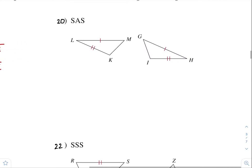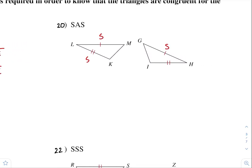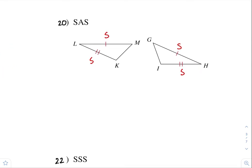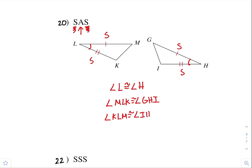Number 20. We have a pair of congruent sides and another pair of congruent sides. What additional piece of information do you need to prove these triangles are congruent by SAS? We already have one pair of sides and another — we're missing the angle. The angle has to be in between the two sides. So the angles in between the two sides are angle L and angle H. Angle L has to be congruent to angle H. You also could have said angle MLK is congruent to angle GHI, or angle KLM is congruent to angle IHG.